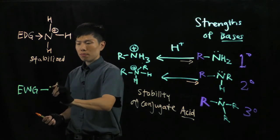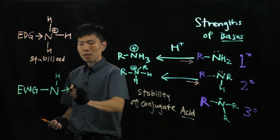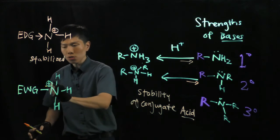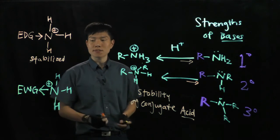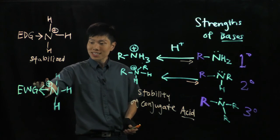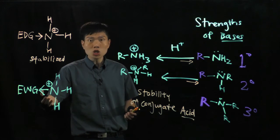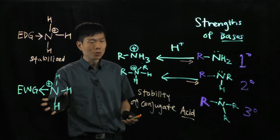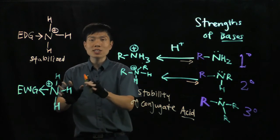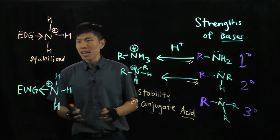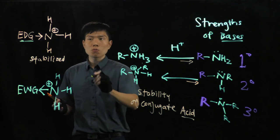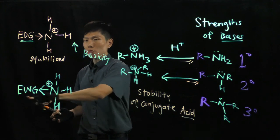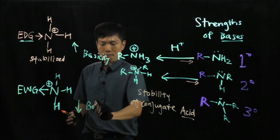For EDG attached to the amine, the conjugate acid is stabilized and basicity increases. Now if we have an EWG — an electron withdrawing group — connected to the nitrogen of the conjugate acid, the EWG will withdraw electrons from the nitrogen, making it even more positive and therefore more unstable. When the conjugate acid is less stable, it prefers to go back into its undissociated form. So electron donating groups increase basicity, and electron withdrawing groups decrease basicity.